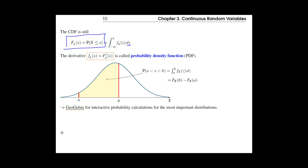The CDF is now the area under the curve of the PDF. The PDF is defined as the derivative of the CDF — we call it the probability density function. It's the blue curve you see here; they typically look like a bell curve as in the picture.